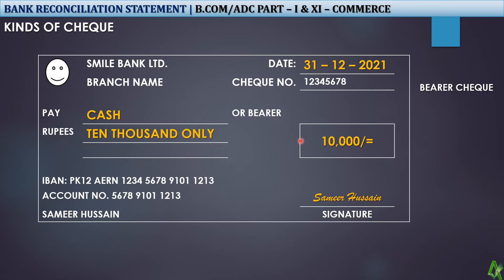So what is the bearer check? It is a cash check — whoever takes that check to the bank, the bank will pay cash from the account immediately. That is the risk of a bearer check — if it is misplaced, whoever finds it can cash it. But if you use a cross check, the check will be secure because the bearer cannot get cash directly.